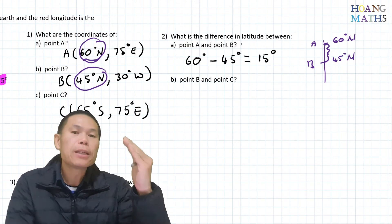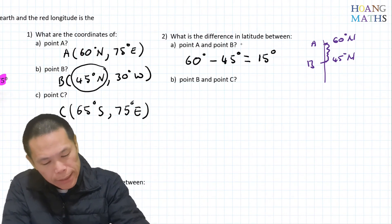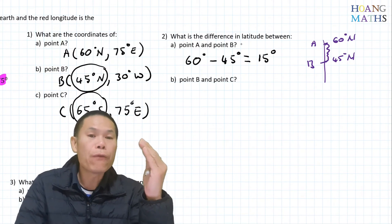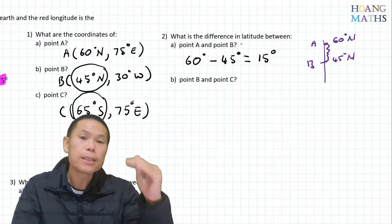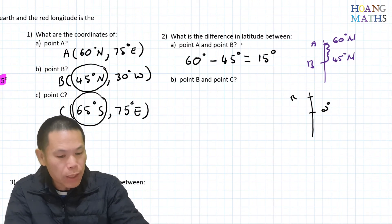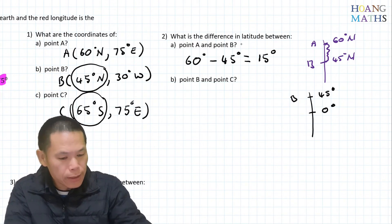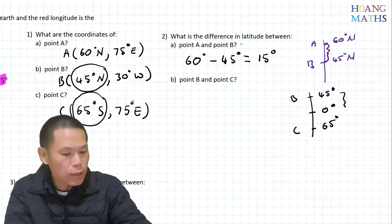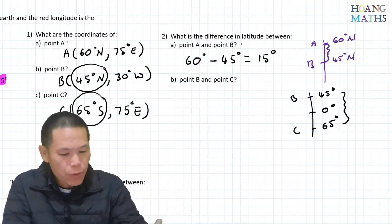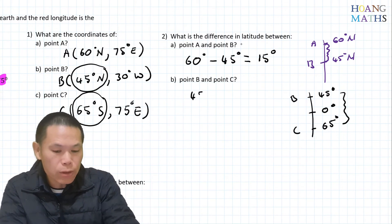For the latitude difference between B and C: B is 45 degrees north and C is 65 degrees south — one is north, the other is south, so we add them. Drawing a diagram: equator at zero, B is 45 degrees above, C is 65 degrees below. The difference is 45 plus 65, which equals 110 degrees.